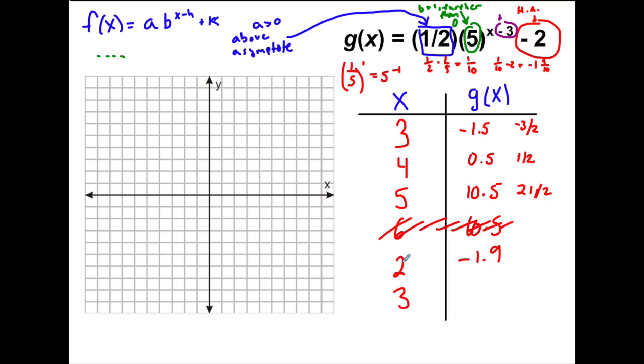Now, if I plug in one, right, what I'm going to get is I'm going to get five to the negative two, which is one over five squared, which is one over 25. And when I do one-half times one-twenty-fifth, I get one-fiftieth. And when I do one-fiftieth minus two, I get negative one and forty-nine-fiftieths, which is negative 1.48.